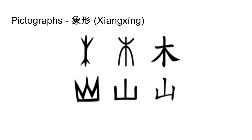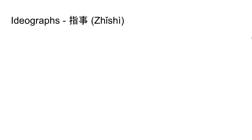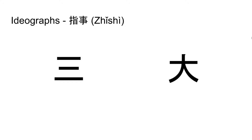Of course, being only able to write about literal objects is a bit limiting, which is why ideographs were also created. This script, Zhizhi, was comprised of characters which represented more abstract concepts, such as verbs, adjectives, numbers, or ideas. The concept of three is not a physical object, but the Chinese still embodied it with three horizontal lines. Similarly, largeness could not actually be seen with the eyes, so instead an image of a man outstretching his arms was used, conveying the meaning of something big.